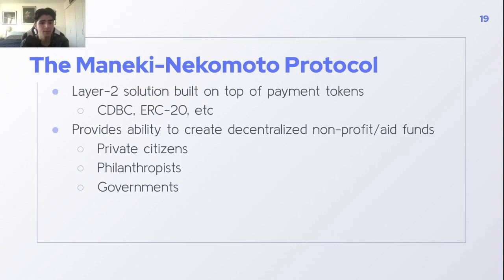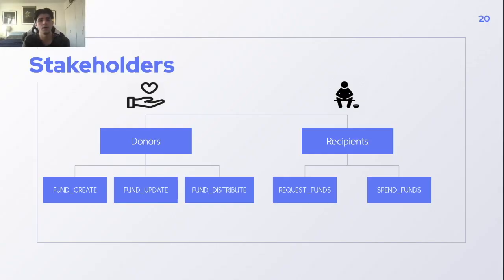Currently, we are trying to get the idea out there and see if there's interest. There are no hard implementation details as of this moment, but this would be built on top of an existing payment token. This would provide the ability to create decentralized nonprofit funds by private citizens, philanthropists, or even governments. The two stakeholders within the protocol are donors and recipients. Donors can execute these smart contracts: fund create, fund update, and fund distribute.